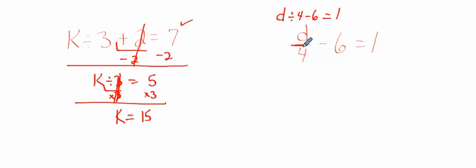All right, so we've got division and subtraction, so I'm going to work with the subtraction first. So the opposite of subtracting 6 is to add 6 to both sides. So these cancel out. I'm left with D divided by 4 has to equal 7.